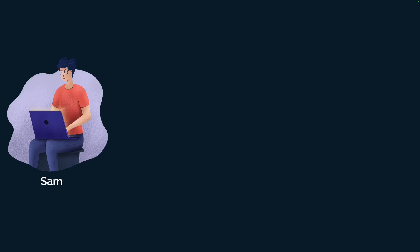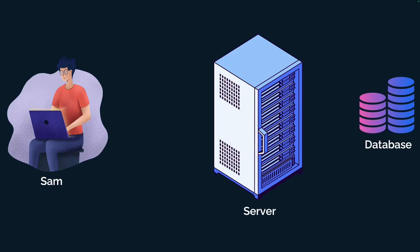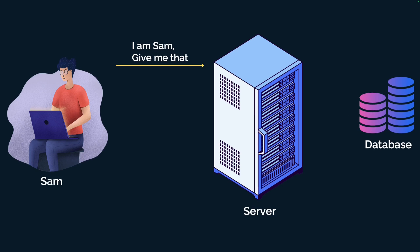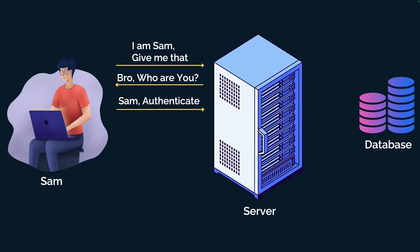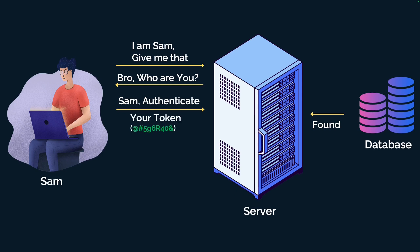Let's see how authentication works with an example. Sam wants to access a service from a server backed by a database. Sam asks the server for something, but the server checks the database and doesn't find Sam. So the server asks Sam to authenticate — to provide credentials. Sam authenticates, the server checks the database again, retrieves Sam's details, and after confirmation the server sends Sam something very sensitive called a token.